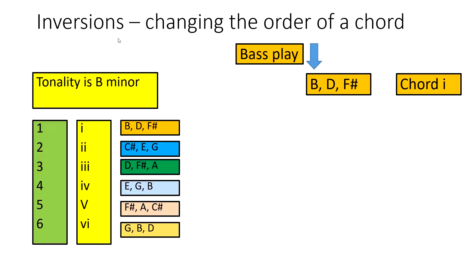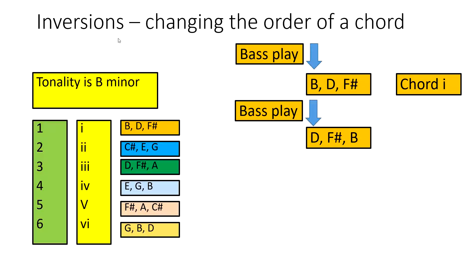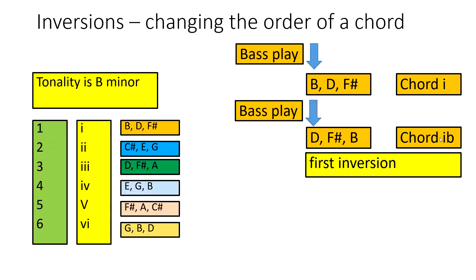Now let's say we play the B minor chord again but this time the note D is in the bass. It's still a B minor chord with B, D, and F sharp — he's just changed the order. This is still chord I, but because it's inverted with D in the bass, it's called first inversion and we put a small 'b' beside the Roman numeral. Imagine the B has gone to the back of the queue, so the next note D is now at the front and played in the bass.